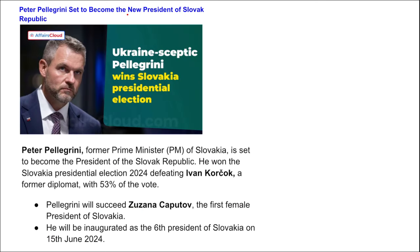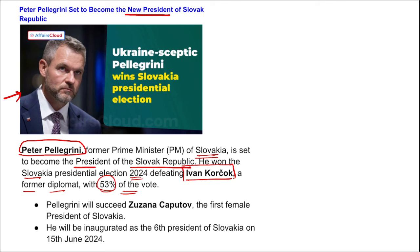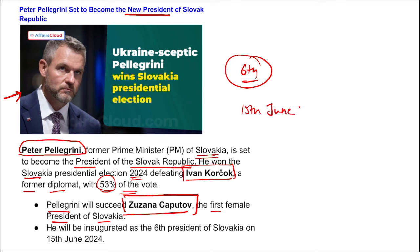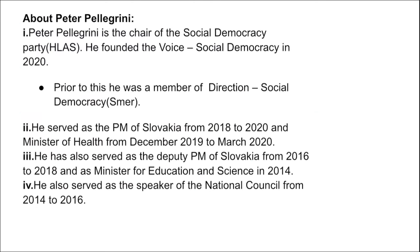Next: Who is set to become the new President of the Slovak Republic? Peter Pellegrini — the former Prime Minister of Slovakia — is set to become the President of the Slovak Republic. He won the Slovakia presidential elections 2024, defeating Ivan Korcok, a former diplomat, with 53% of the votes. He will succeed Zuzana Caputova, who was the first female president of Slovakia, and will be inaugurated as the sixth president of Slovakia on 15th June 2024.